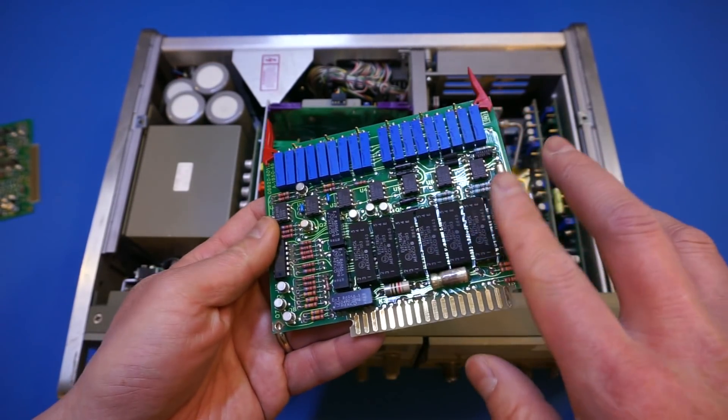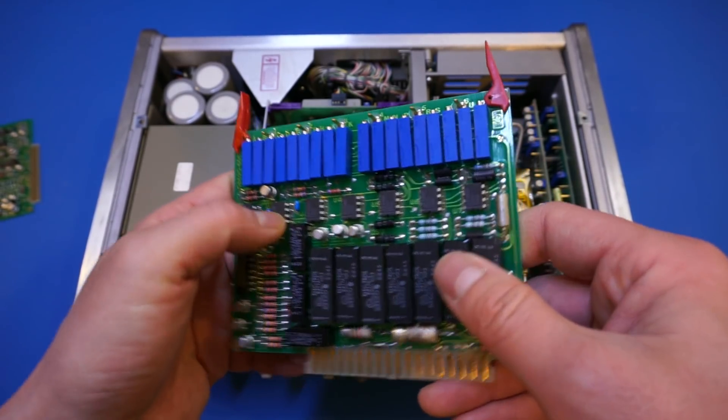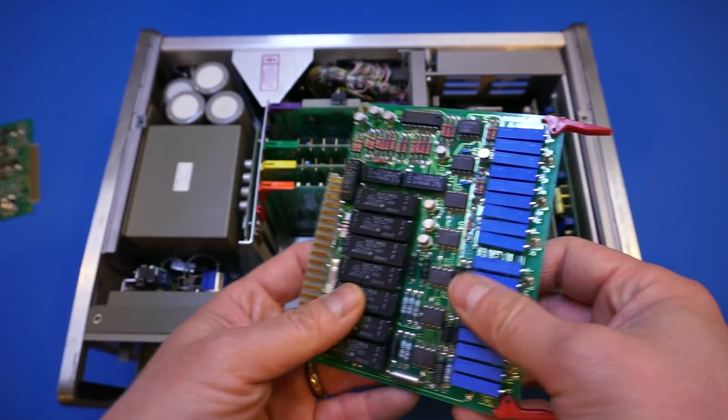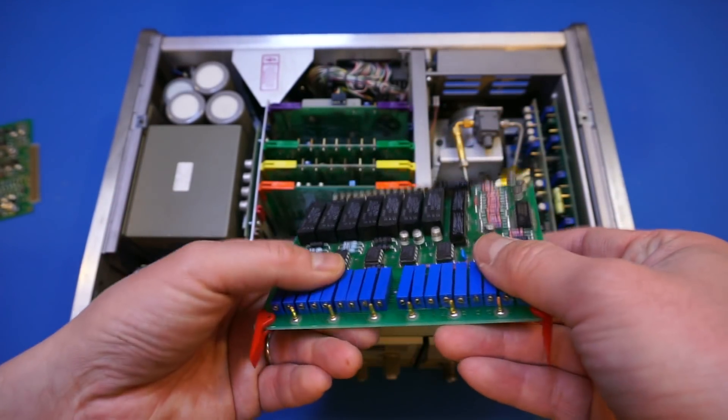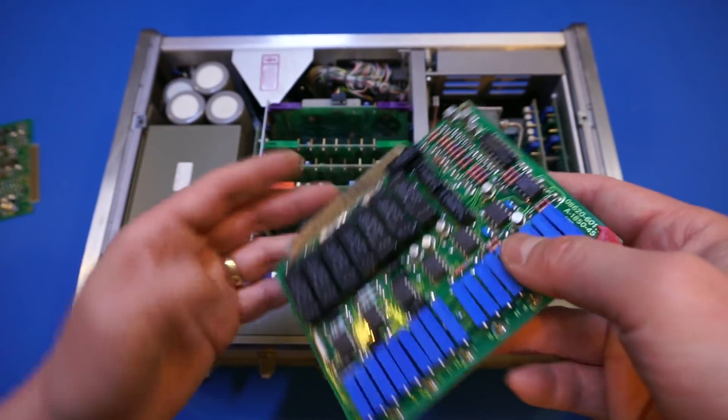And wow, so the first thing you see is we have one, two, three, four, five, six, all these relays here. And these are for switching on and off, not the channels, but different ranges, I believe.